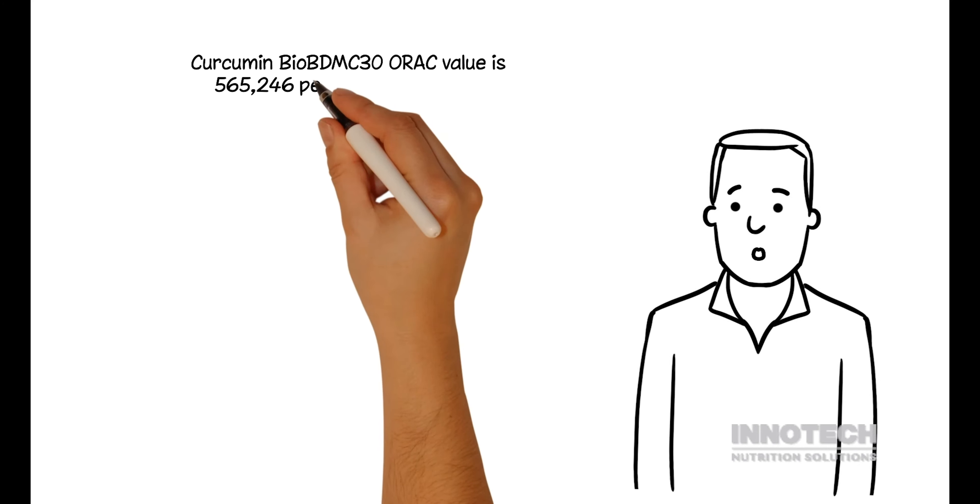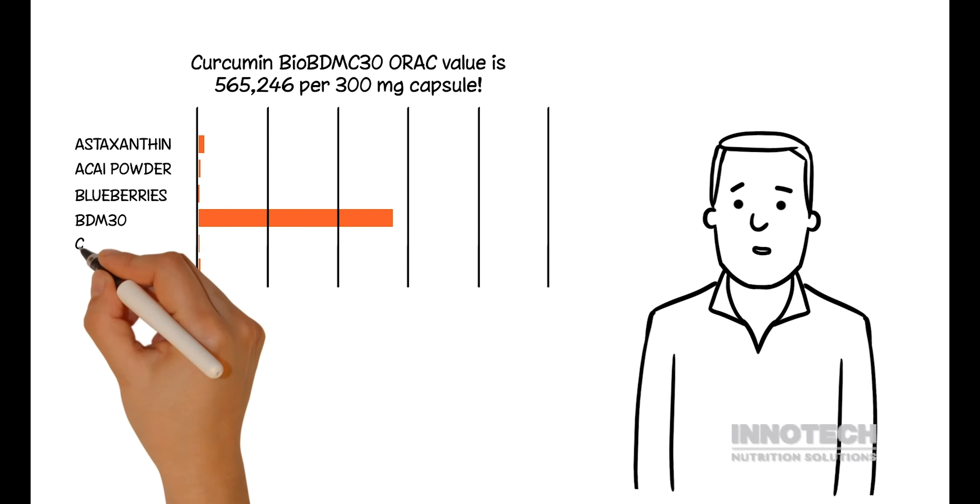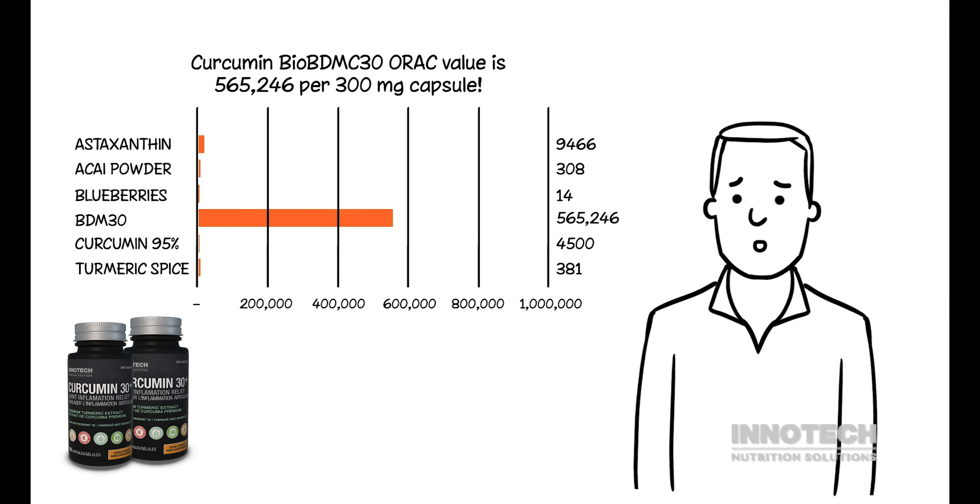The antioxidant activity of BioBDMC30 is unprecedented, measuring in the millions per gram compared to regular curcumin, measuring 5,000 to 9,500 per gram.